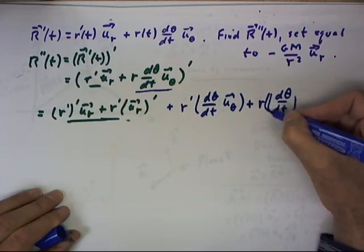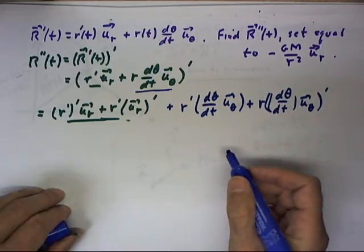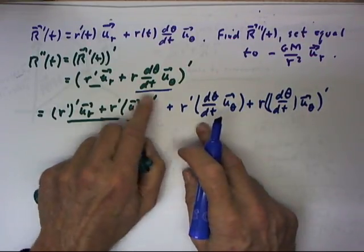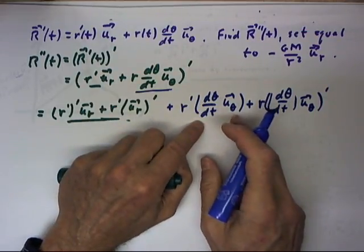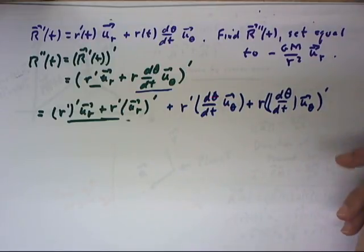Shouldn't have had a parenthesis there, but let's go ahead and just put another one in. So we have the derivative of the r function times the rest of the function plus the r function times the derivative of the rest of the function.